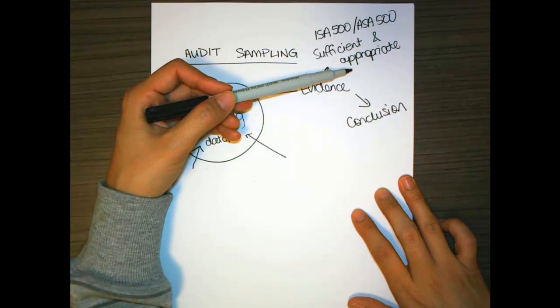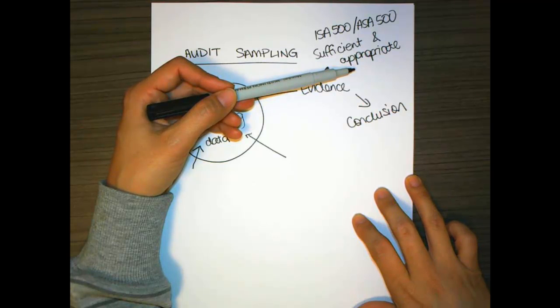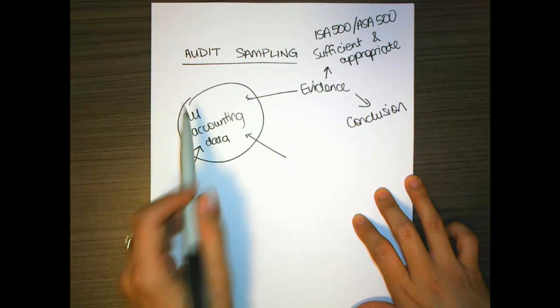So in audit sampling, we make a conclusion about the entire accounting data based on a sample of transactions.